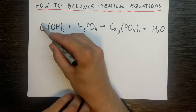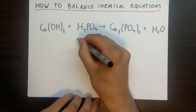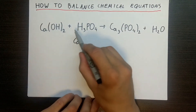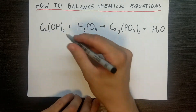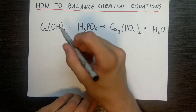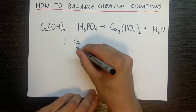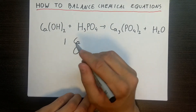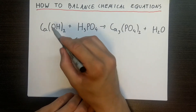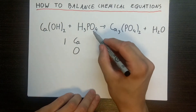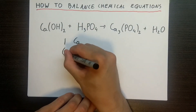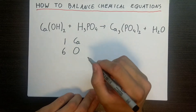Let's start with calcium. We have only one calcium on this side of the equation. Oxygens are up next. We have two O here in this molecule, and we also have four oxygens here, so we have six oxygens in total.